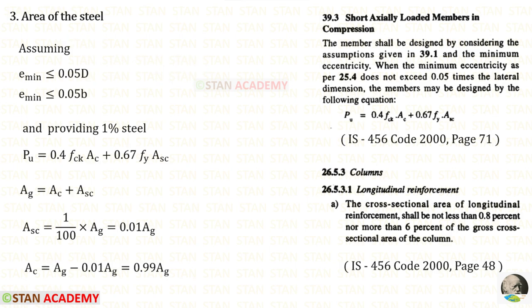Now we are going to find the area of steel and the dimensions. To find the area we can use this formula, but to use this formula the minimum eccentricity should not exceed 0.05 times the lateral dimensions. In the question, the lateral dimensions are not given.